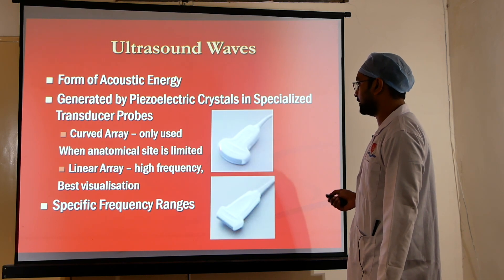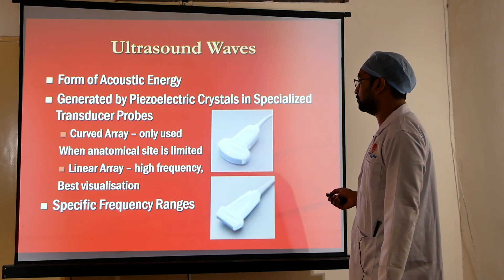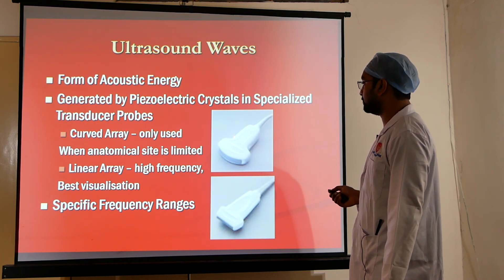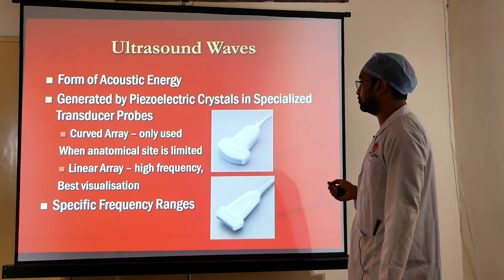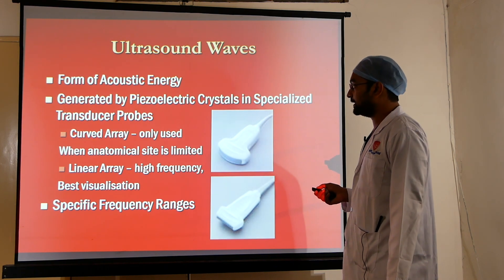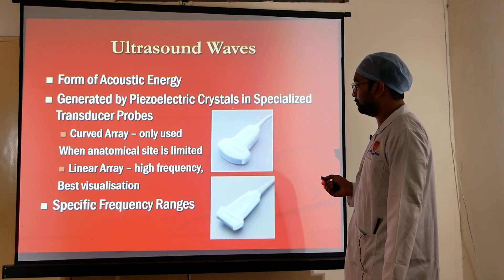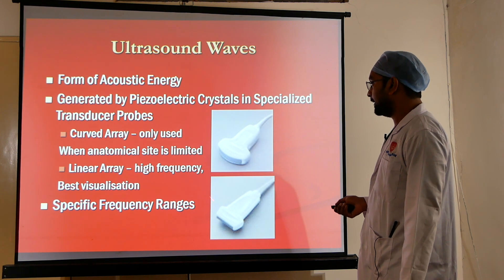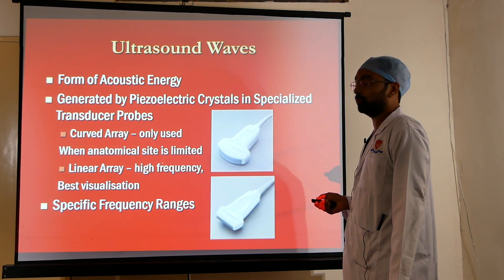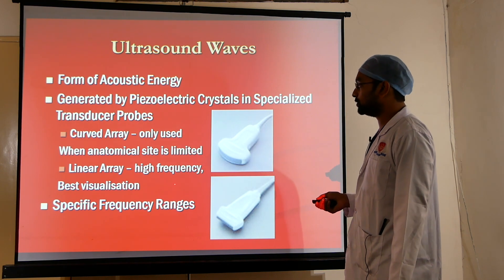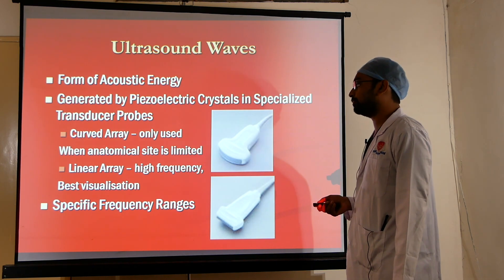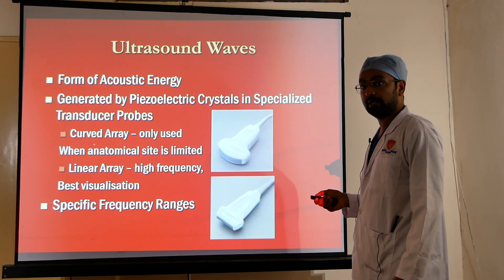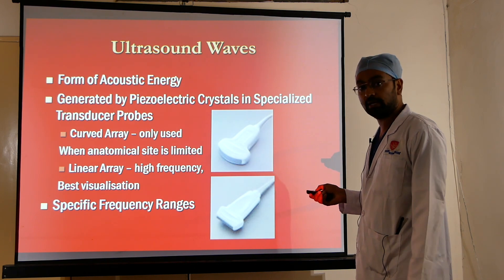The two main probes commonly used are: first, the curved probe, used when anatomical site is limited. It is a low frequency but high depth probe, used for visualizing very deep structures. Second, the linear array probe, which is a high frequency but low depth probe, providing best visualization for superficial structures. A pencil-shaped probe is also available, used for cardiac echo.